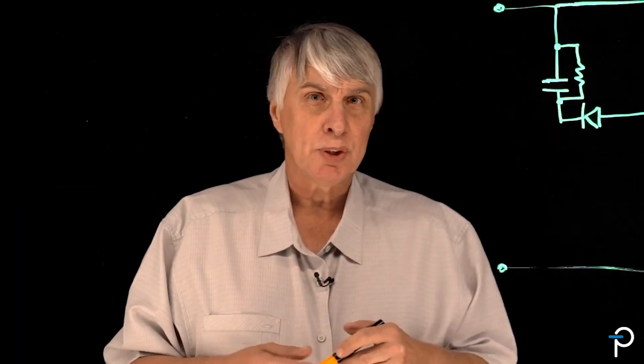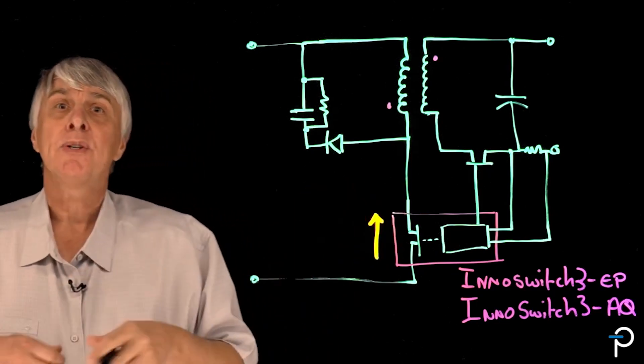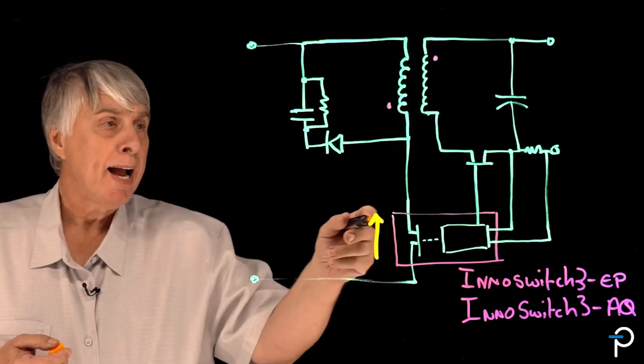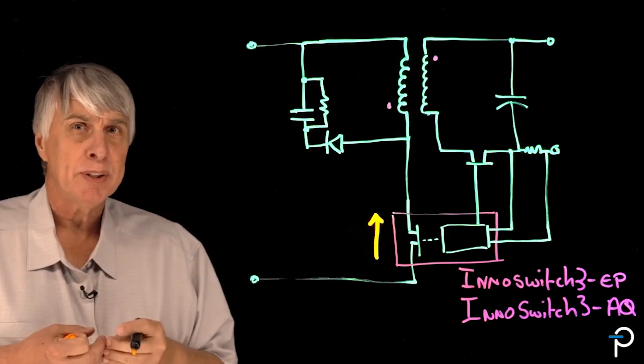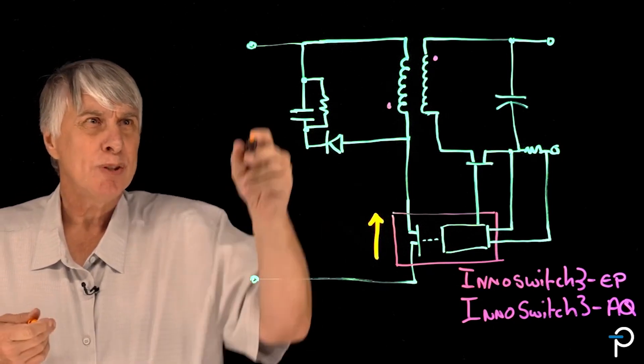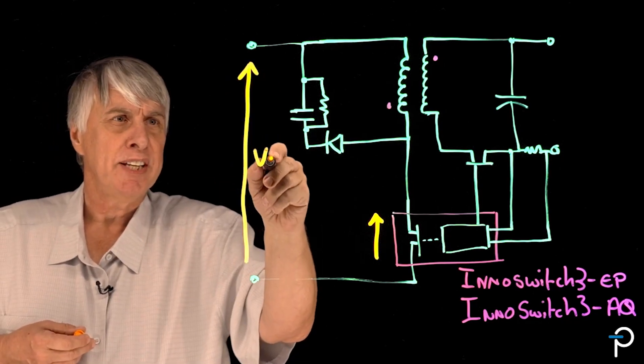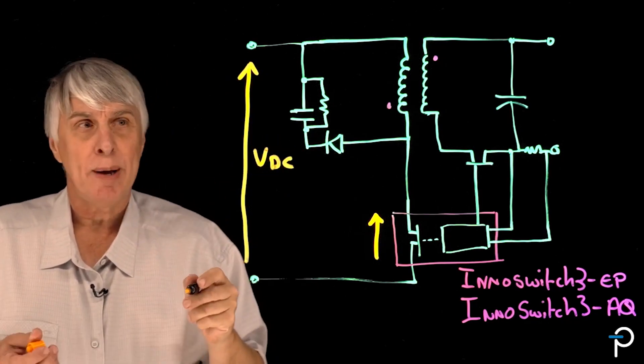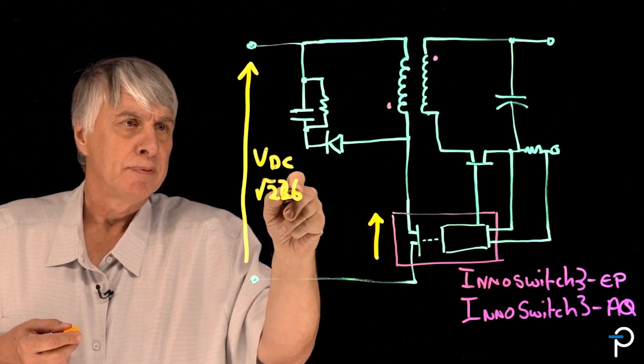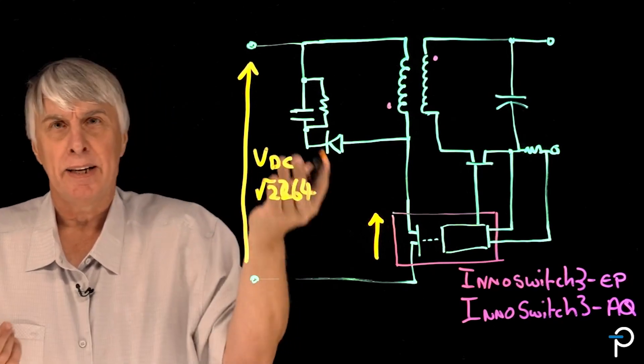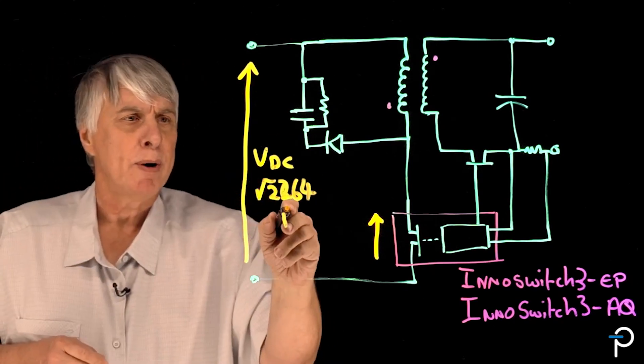In order to determine what the switching stress on the primary power switch is, we need to look at the circuit and describe how the voltage is developed across that transistor. In a flyback power converter it comes from three places. The first one is fairly obvious, the input voltage to the circuit. That's the first part, so we'll call that number one.